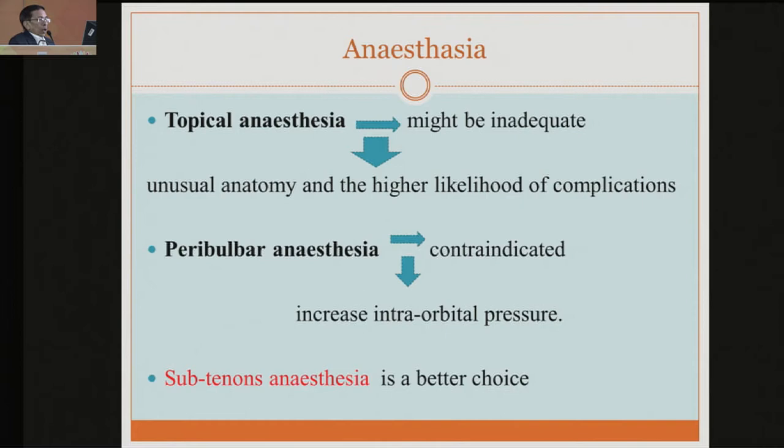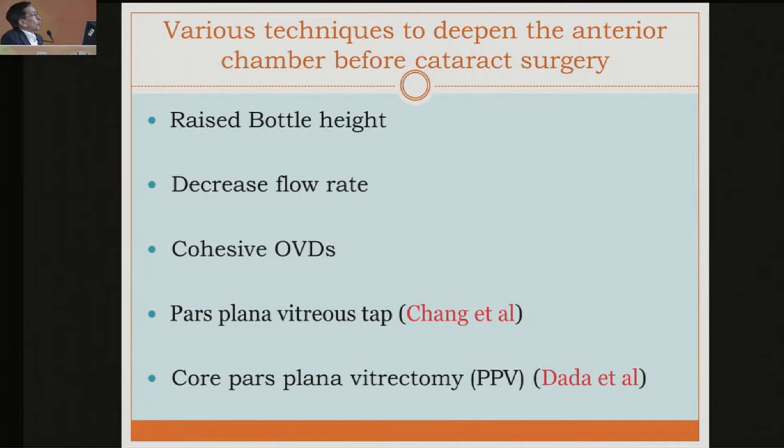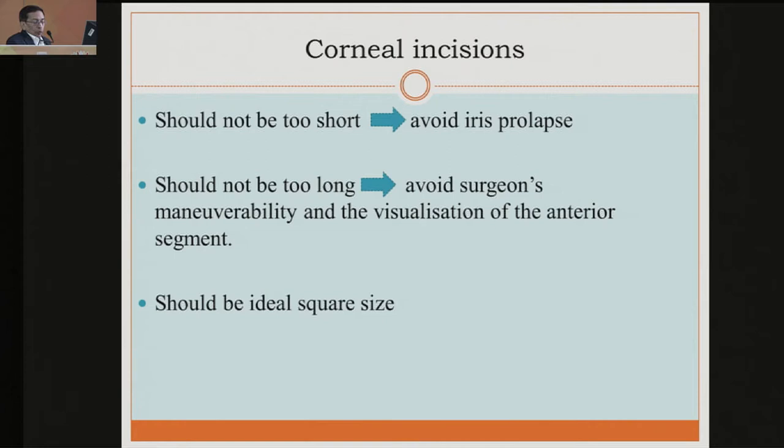Sometimes the peribulbar or topical approach may indicate you should convert to peribulbar or sub-Tenon's anesthesia. Make use of a good viscoelastic to deepen the chamber, raise the bottle height, and decrease the flow rate. If you get repeated shallow chamber, a pars plana core vitrectomy can be done to reduce the vitreous pressure. The corneal incision should not be too short.